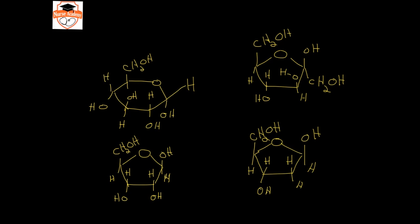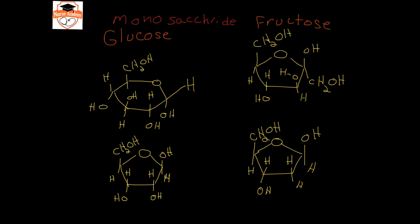Here are a bunch of carbohydrates that are monosaccharides. The term 'mono' means one, and each one of these is separate — they are not bound together into polymers. This top structure is glucose, and this next structure to the right of it is fructose. When you take glucose and fructose and put them together, that makes sucrose, which is the same as table sugar. These are monosaccharides, so they only have one sugar in them.